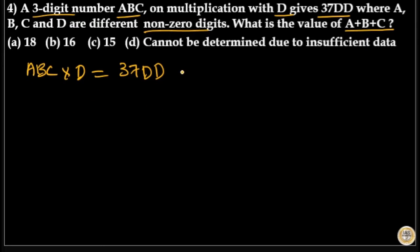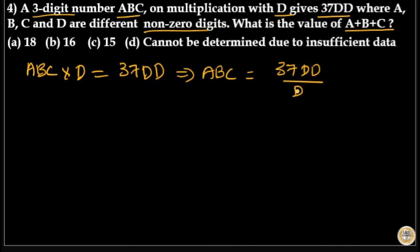That means ABC is equal to 37DD divided by D. You cannot cancel this D with the D in 37DD — for example, if D is 5, you cannot cancel that 5. Please don't cancel this D by mistake.